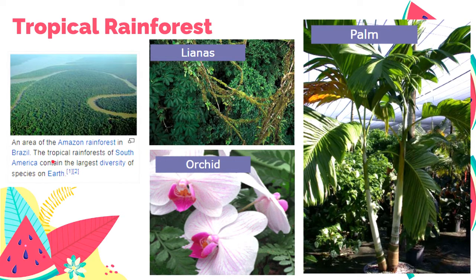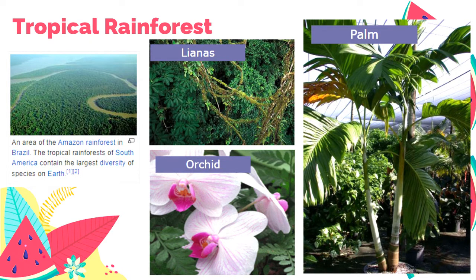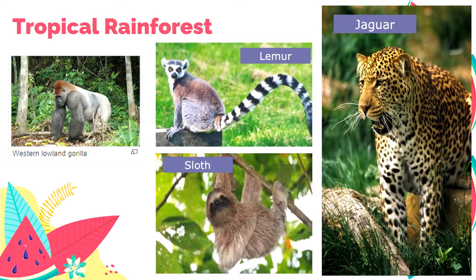Tropical rainforests in South America contain the largest diversity of species on Earth. Even if you combine the species in all the other biomes, there are more species found in tropical rainforests. More organisms you can find include jaguar, lemur, sloths, and gorillas in tropical rainforests.